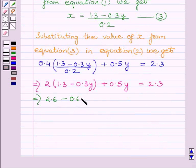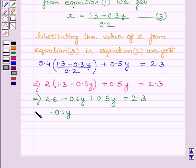Now we get 2.6 minus 0.1y is equal to 2.3. So minus 0.1y is equal to minus 0.3.